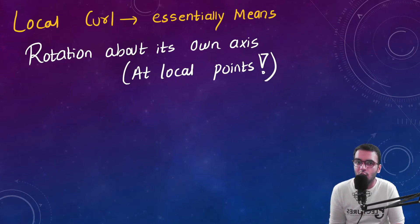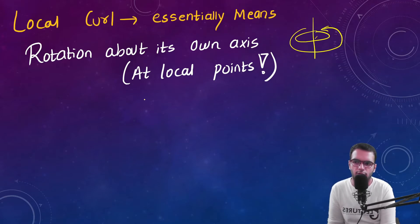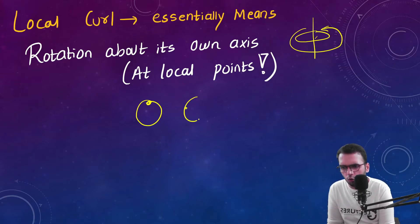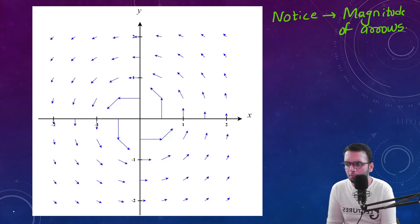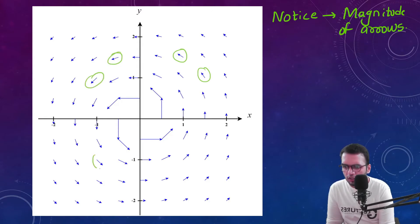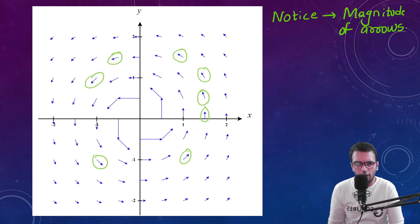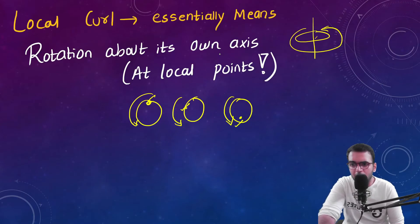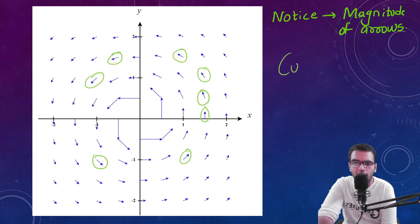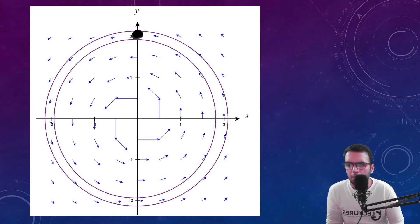Local curl essentially means rotation about an object's own axis. If an object is rotating about its own axis, that is what is defined as curl. Now notice — if I consider a concentric circle around this rotating field and look at the magnitudes of the arrows, the magnitude of all the arrows is completely the same. If the magnitudes are the same there is no unbalanced force, so the object will not rotate about its own axis, which means there is no local curl — the curl is zero.